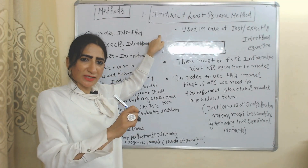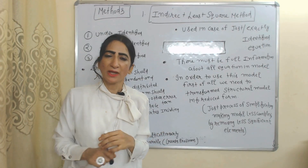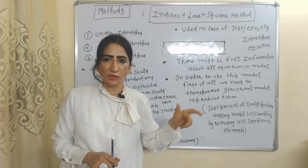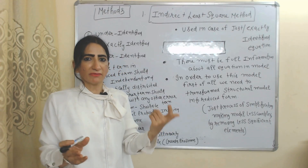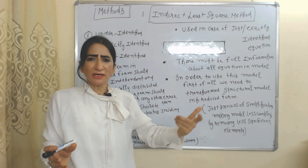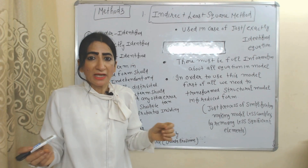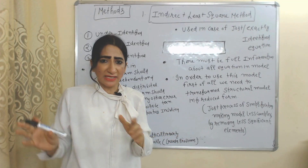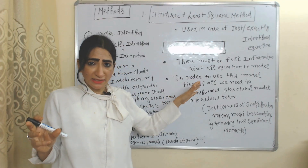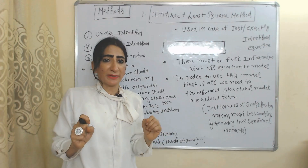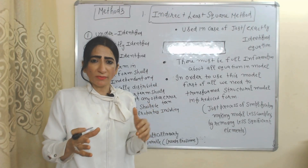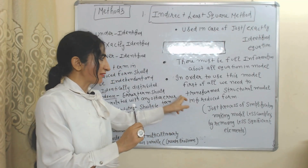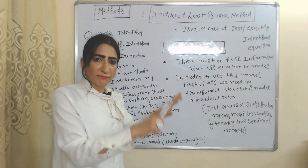In order to use ILS, first we transform the structural model into reduced form. That means we simplify the model by removing less important elements. After transforming the structural model into reduced form, we apply OLS. As discussed, we cannot apply OLS directly in simultaneous equations, but we can apply it in reduced form because the dependent variable is expressed solely in terms of independent variables.